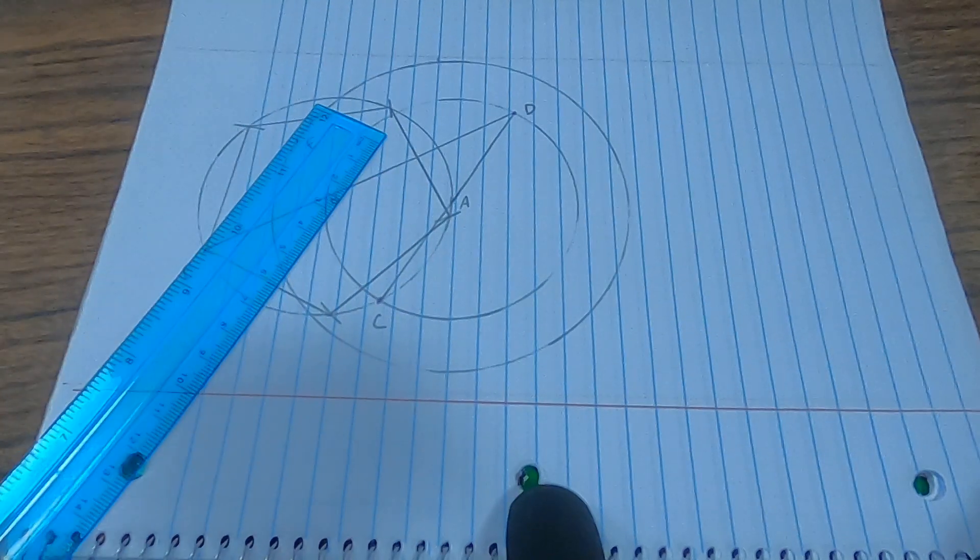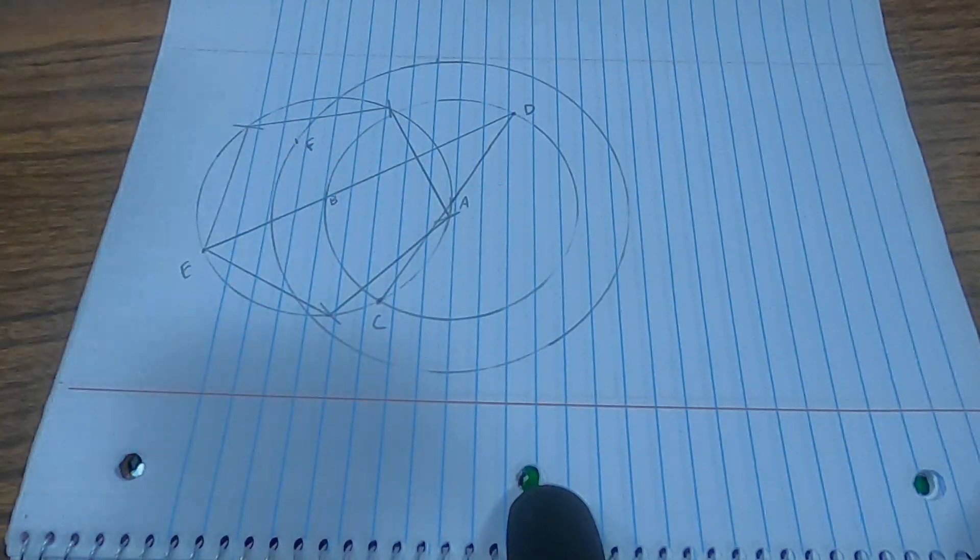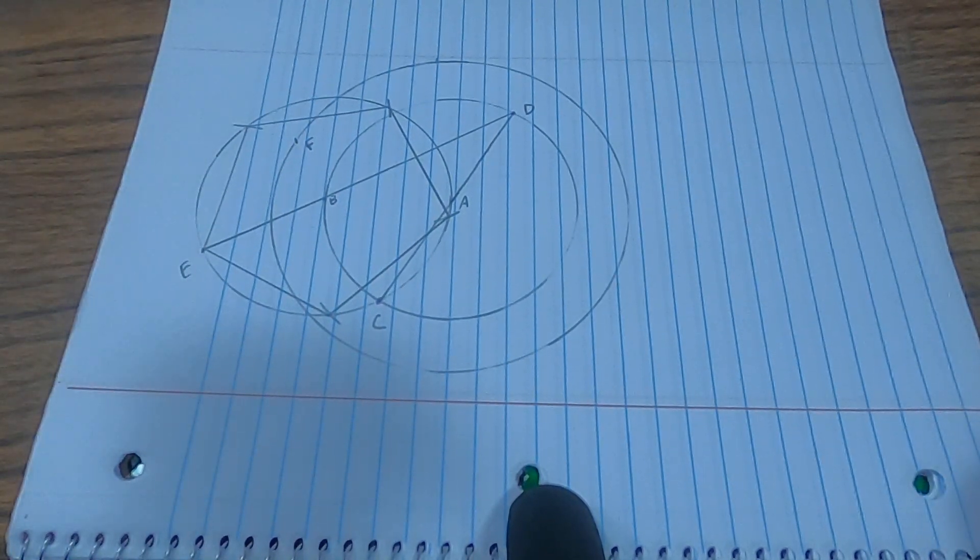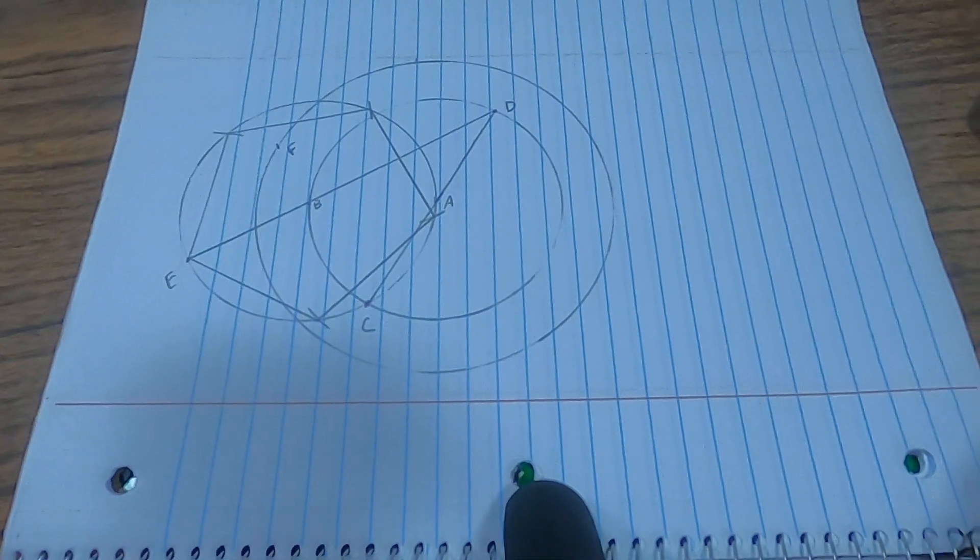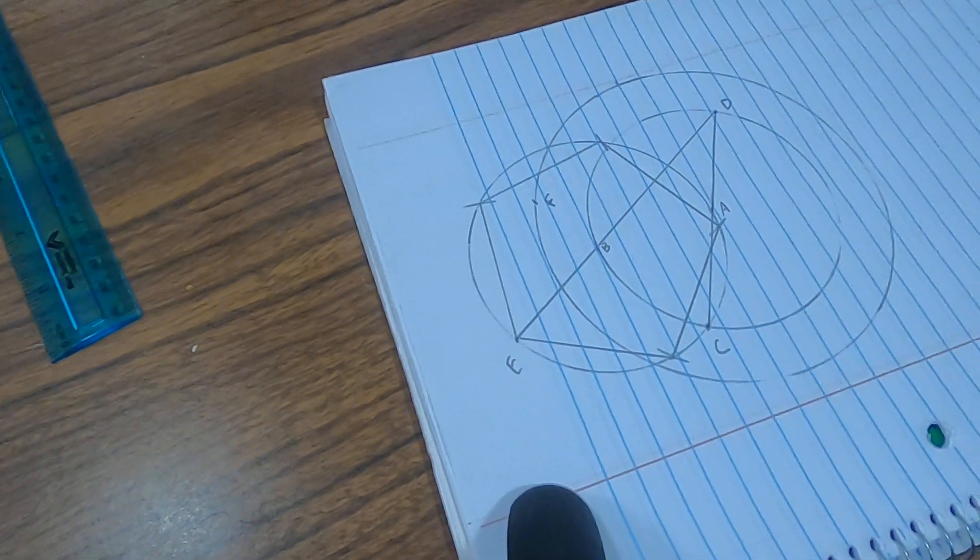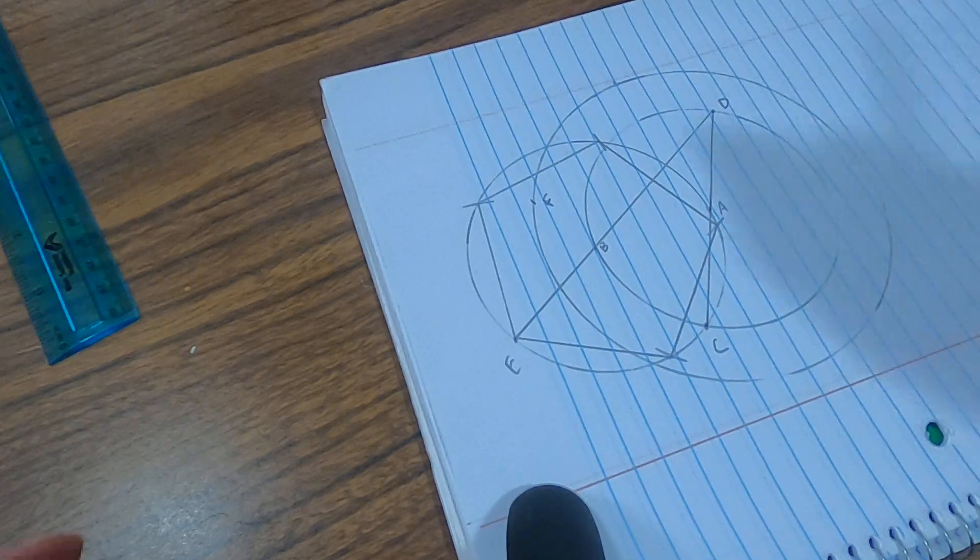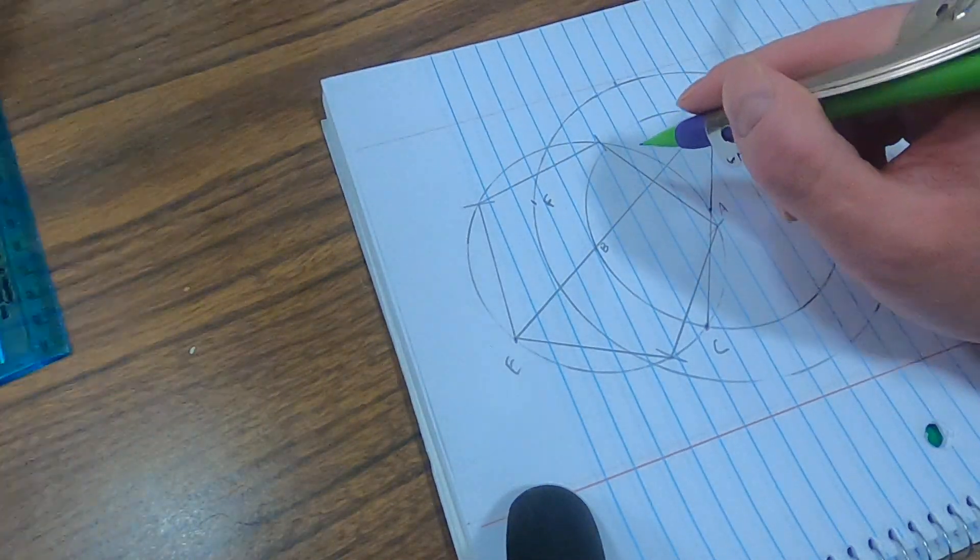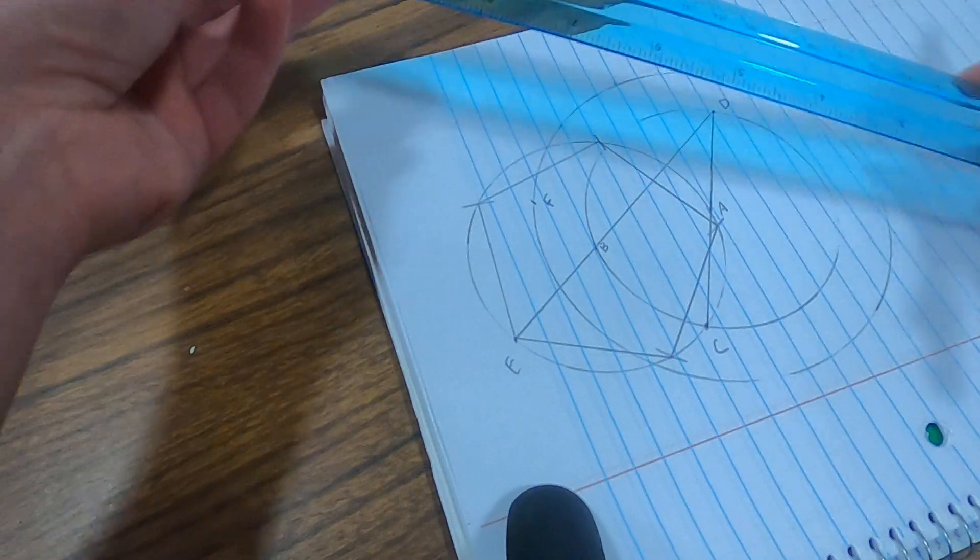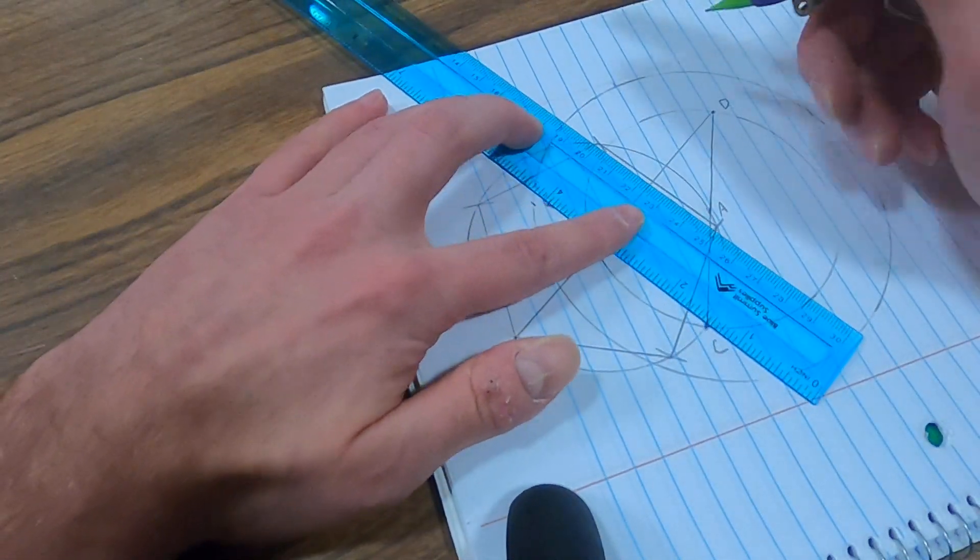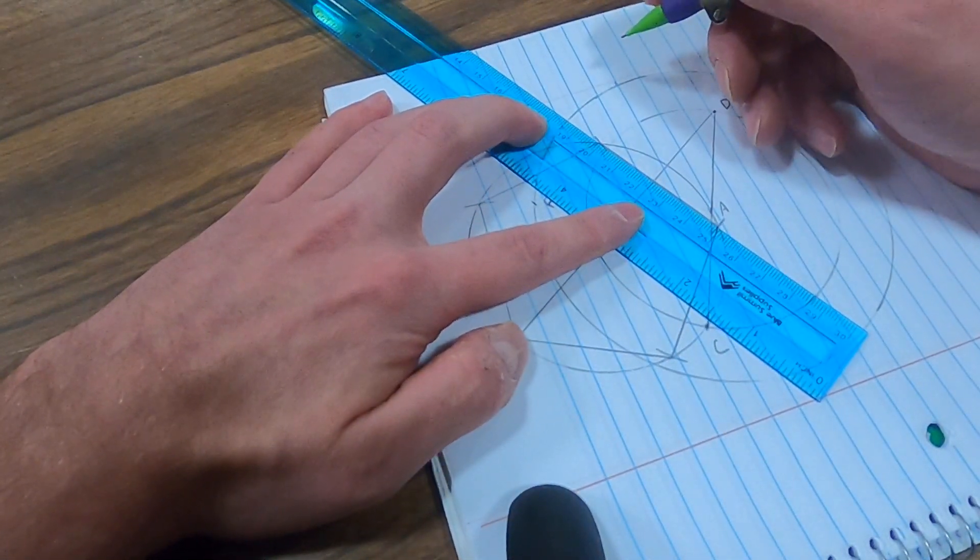No ruler needed for lengths. No protractor needed for angles. Just a compass and a straight line creator. And there it is. Let's get a better view of that guy. So we can see. There it is. Straight. Regular. Every angle is 108 degrees. I don't even need to measure it. I'm so confident.